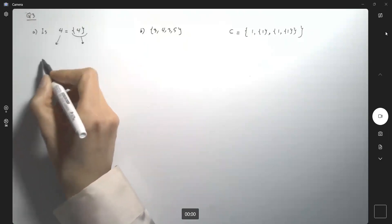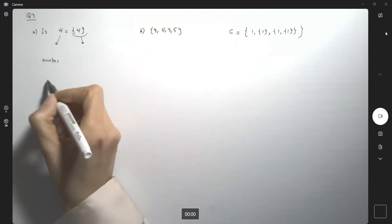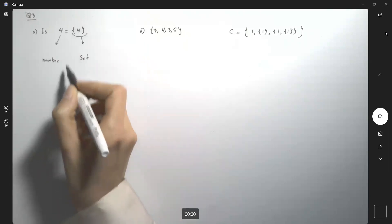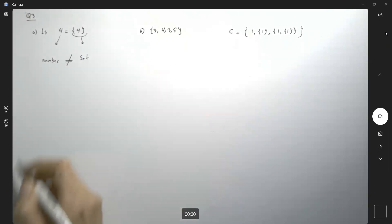On the left-hand side, you have an object which is just a number. On the other side, you have a set. In general, set and number are not equal to each other.